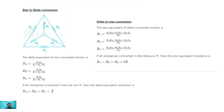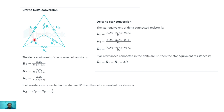The first one is a star-to-delta conversion. Suppose this is our star connection and we need to convert it into a delta connection. To calculate the value of Ra: Ra is equal to R1 into R2 upon the sum R1 plus R2 plus R3. So the delta equivalent of a star-connected resistor: Ra equals R1·R2 / (R1 + R2 + R3).